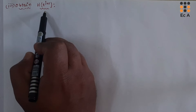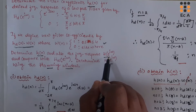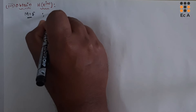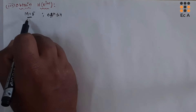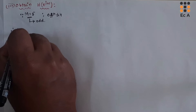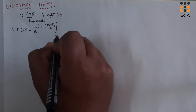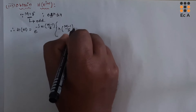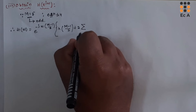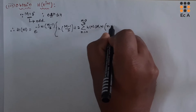Now let us find H of e^jω, the frequency response of the filter. The N value ranges from 0 to 4, so M equals 5, which is the length of the filter. Since M equals 5 is an odd value, we can write H(ω) as e^(−jω(M−1)/2) times the quantity H((M−1)/2) plus 2 times the summation for N from 0 to (M−3)/2 of H(N) cos(ω(N − (M−1)/2)).